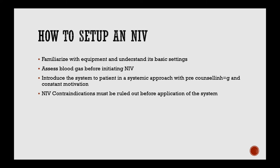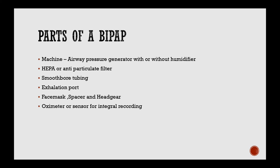To set up NIV: staff must first familiarize themselves with the equipment and its basic settings. Blood gas analysis should be done before initiating NIV. Introduce the system to the patient with a systematic approach and pre-counseling so the patient is not agitated. NIV contraindications must be ruled out before application. Parts of a BiPAP include: the airway pressure generator with or without humidifier, HEPA or anti-particulate filter, smooth-bore tubing, exhalation port, face mask, spacer, and headgear.